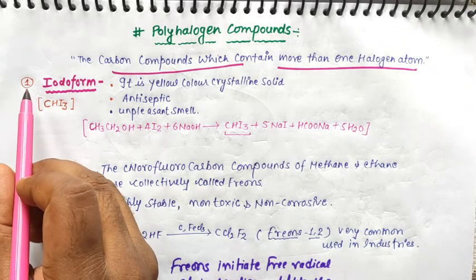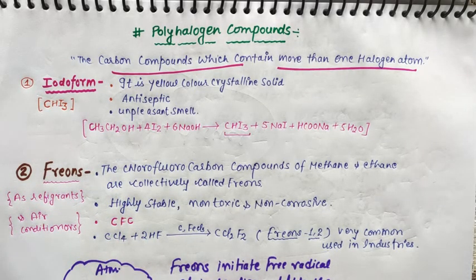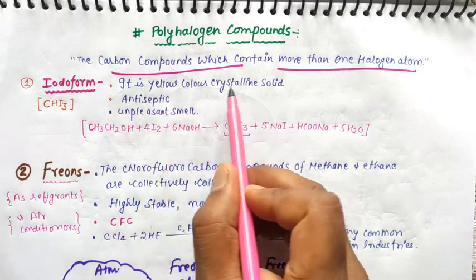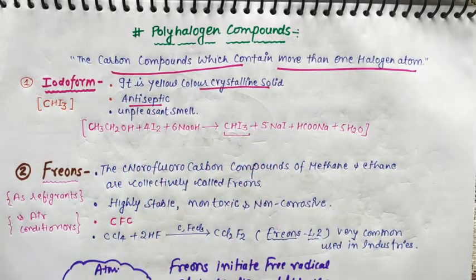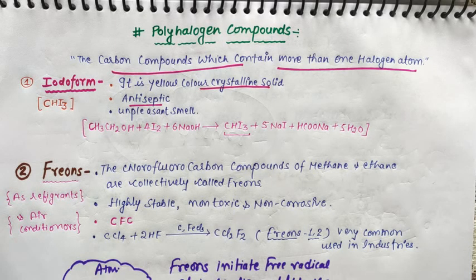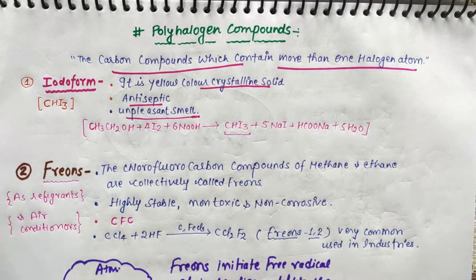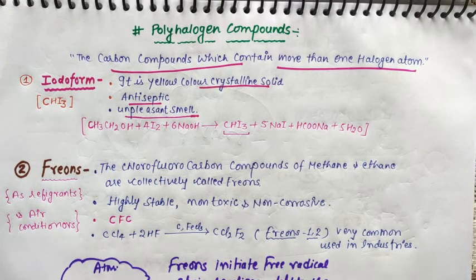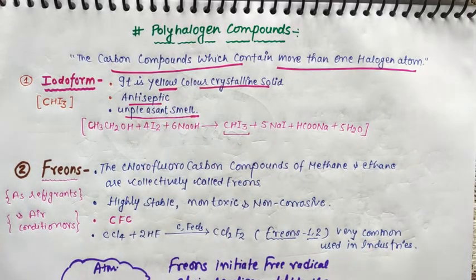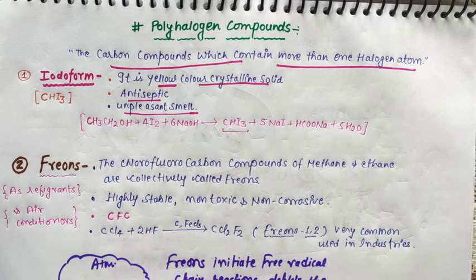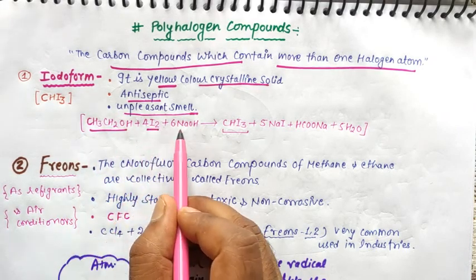First compound we are going to discuss is iodoform. This compound is very important as we will discuss the iodoform test. It is used as an antiseptic and has a very unpleasant smell. This is a yellow color test which is specific for its test. The main important thing is that it is used as antiseptic.